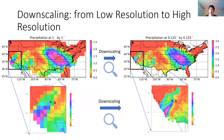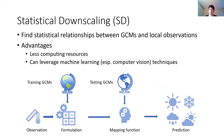Therefore, people propose a technique called downscaling to get higher resolution climate variables from GCMs. One type of downscaling is called statistical downscaling, which is a data-driven technique that tries to find statistical relationships between GCMs and local observations.